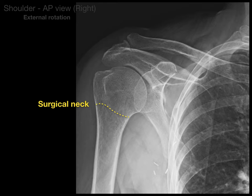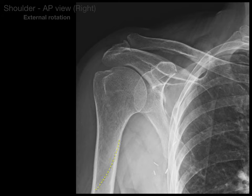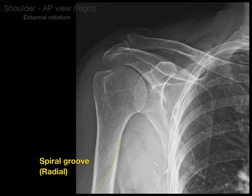A surgical neck fracture will often injure the axillary nerve. In the diaphysis or shaft of the humerus, there is the spiral groove on the back — also known as the radial groove — because the radial nerve courses within it. With a spiral groove or mid-humeral fracture, the radial nerve is often injured.